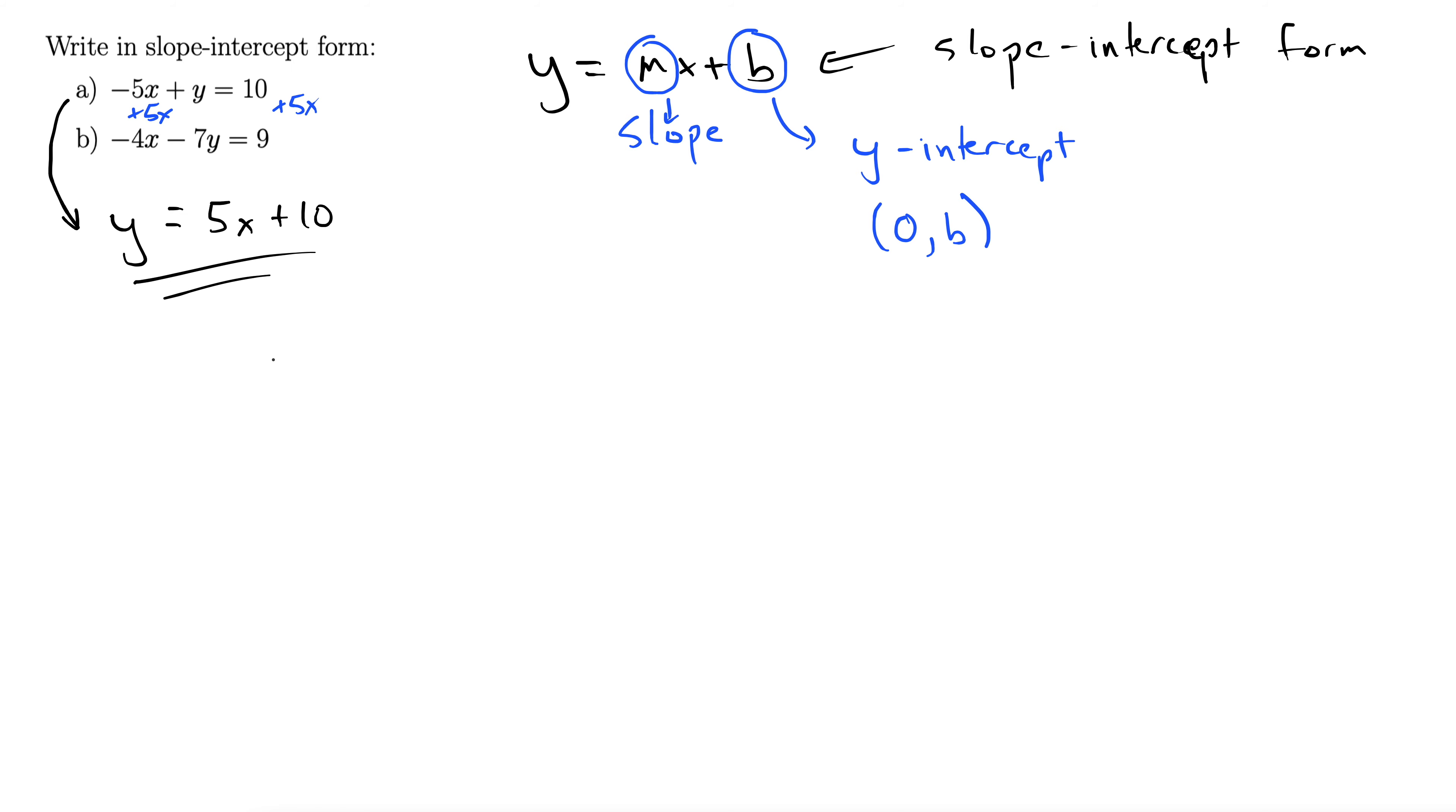It's in slope-intercept form. 5 is our slope, and 10 is our y-intercept.